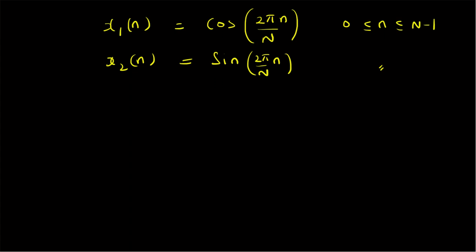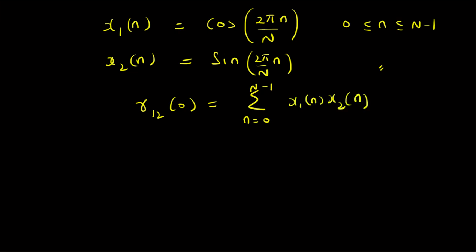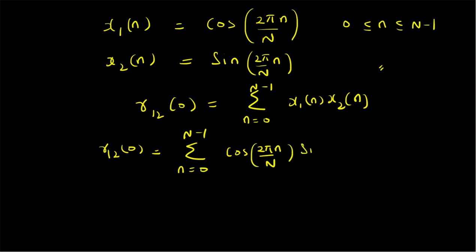We want to show that these two signals are orthogonal, that is the correlation at lag 0 is equal to 0. That is r12(0), which is basically the summation from n equal to 0 to N minus 1 of x1(n) and x2(n). We want to show that this product is equal to 0. So r12(0) is defined as the summation n equal to 0 to N minus 1 of cos(2πn/N) times sin(2πn/N).